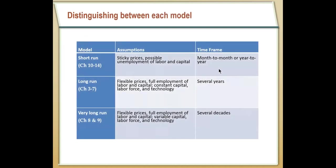To keep things simple: the first theory we covered was the economy in the long run over several years, where we assumed flexible prices and had unemployment but didn't really explain fluctuations in it. Then we moved to growth — the economy in the very long run — still assuming fully flexible prices and full employment of labor and capital, but allowing capital and labor to grow. Now for the rest of the semester, we're going to focus on the economy in the short run, assuming prices are fairly sticky and that we can have short-run fluctuations in unemployment, looking at changes from month to month or year to year.